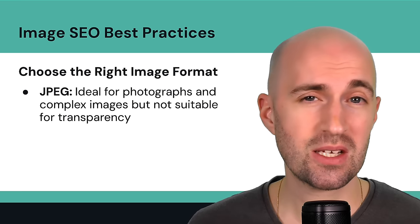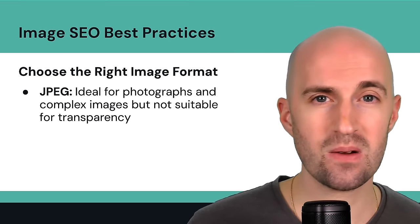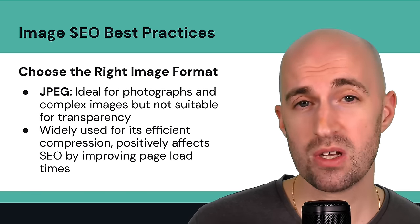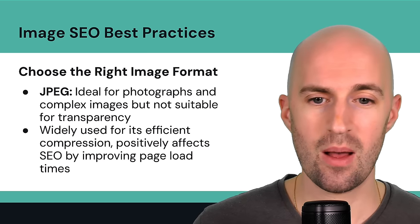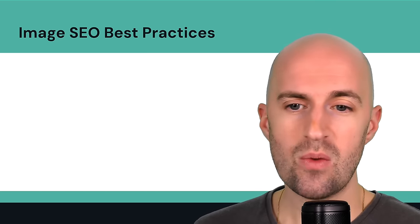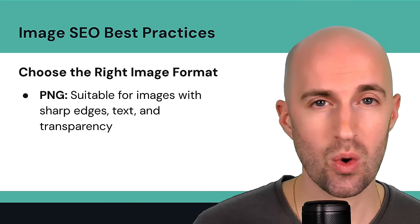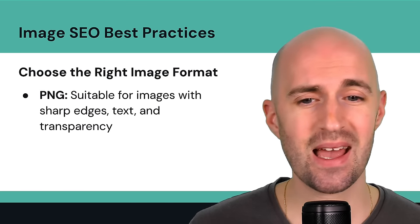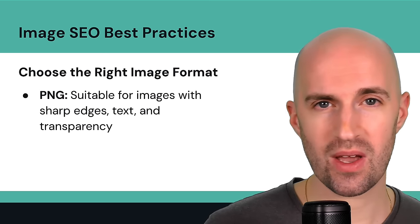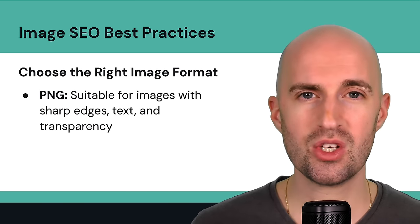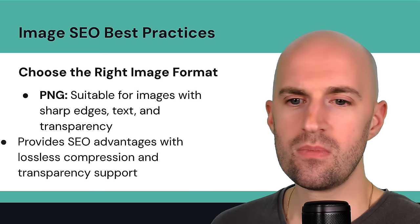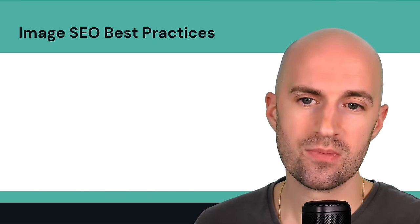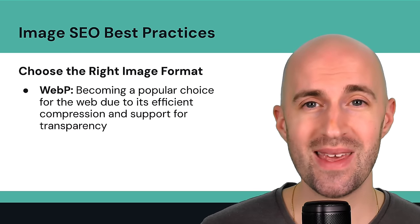JPEGs are probably the most common format — ideal for photographs and complex images, but they don't support transparency. They're widely used for their efficient compression, which positively affects SEO through page load time improvements. PNG files are also widely used on the web, suitable for images with sharp edges, text, and transparency — more for graphics requiring high definition and accuracy. They provide SEO advantages with lossless compression and transparency support.